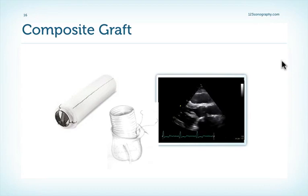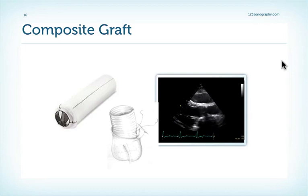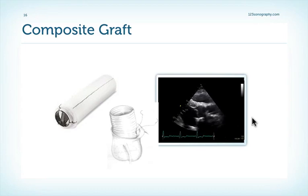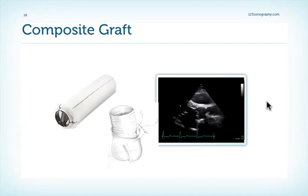A composite graft is characterized by a mechanical prosthesis with typical shadowing and the Dacron structure of the ascending aorta. The aortic root is usually very thick, and you can appreciate the bright echoes and the zigzag structure of the wall of the tube graft. In reality, it's very difficult to really see the tube part of the graft and we can easily miss it. Therefore, we have to rely on the correct referral diagnosis and information as to what has been operated.